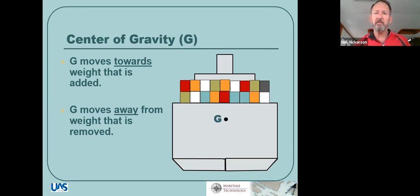Conversely, center of gravity moves away from weight that we take away. In other words, we burn up all our fuel, use up all our water. That was weight that was down low. As it empties out, as it goes away, center of gravity goes up. If we got rid of all our topside weight, center of gravity would go down. It moves away from weight that we remove. It moves towards weight that we add.